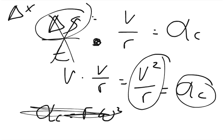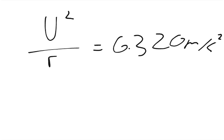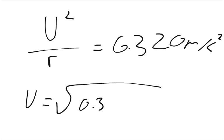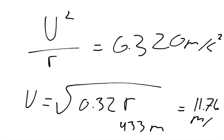So our centripetal acceleration is v²/R. The problem tells us the tangential acceleration is 0.320 m/s². Setting centripetal equal to tangential: v²/R = 0.320. Solving for v, multiply both sides by R and take the square root: v = √(0.32 × 433) = √(138.56) ≈ 11.76 meters per second. That's the answer to Part A.